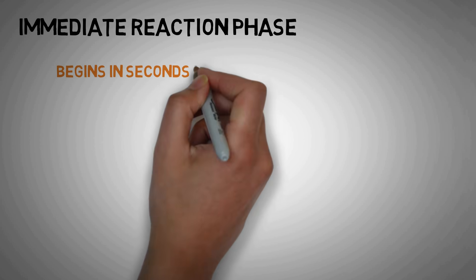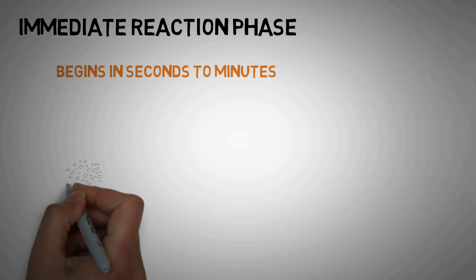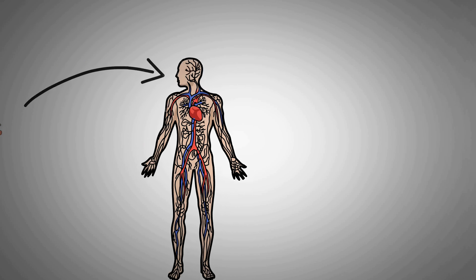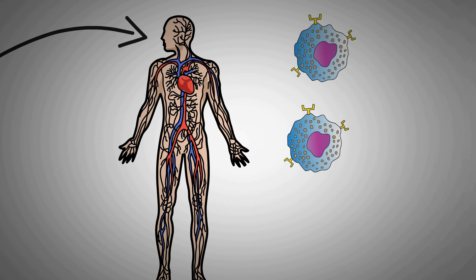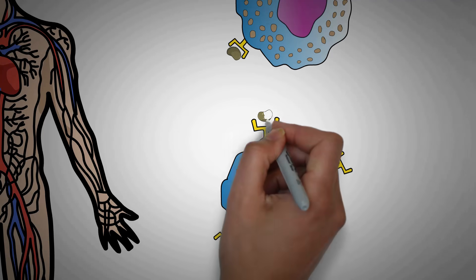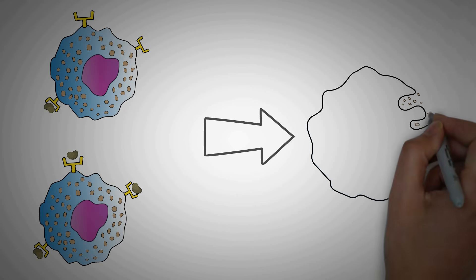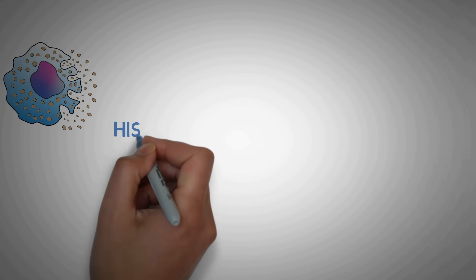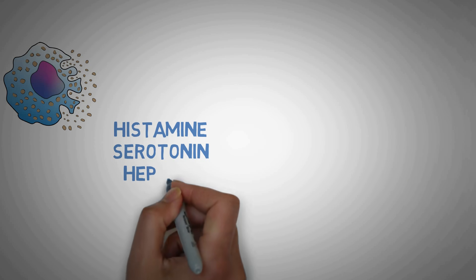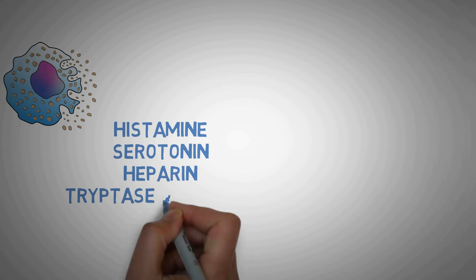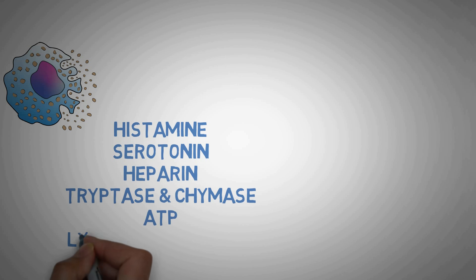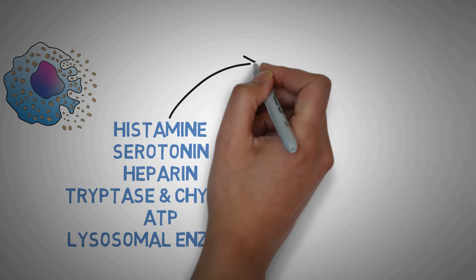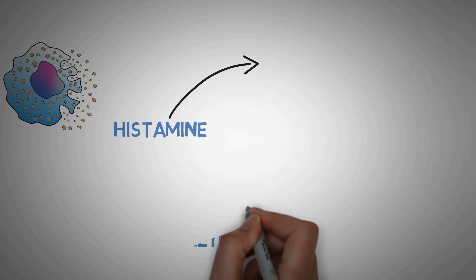The immediate reaction starts within minutes of exposure to the allergen. As soon as the allergen re-enters the body, it is recognized by IgE antibodies bound to mast cells and basophils, which sends a signal to the mast cells to release preformed mediators. These include chemicals like histamine, serotonin, heparin, proteases like tryptase and chymase, ATP, and lysosomal enzymes. The most important of them is histamine.